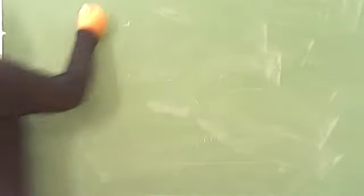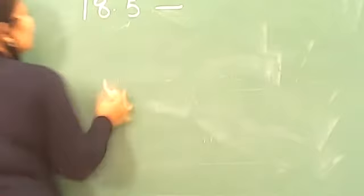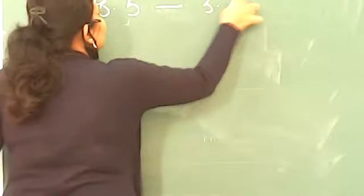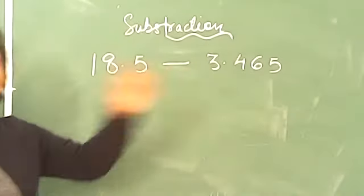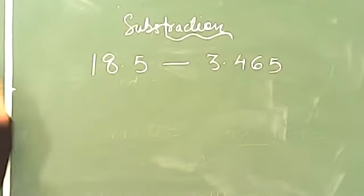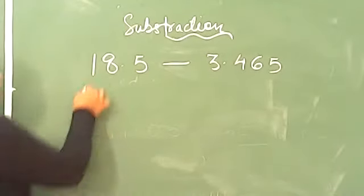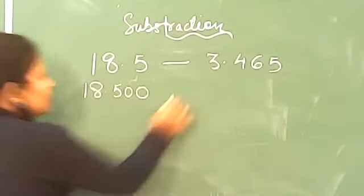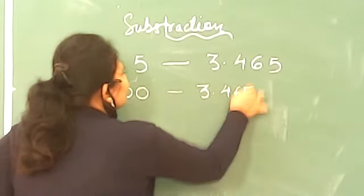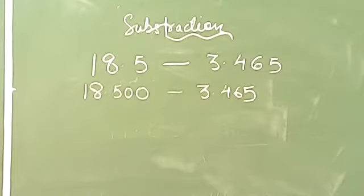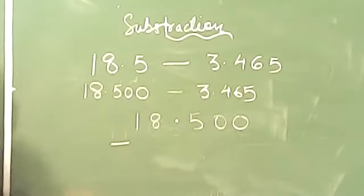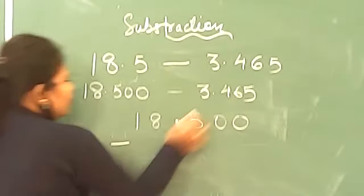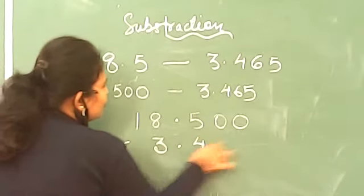Suppose your question is 18.5 minus 3.465. Suppose your question is this. Remember always, first we have to convert to like decimal. Again you don't have like decimal, so first you will convert to like decimal. It would give us 18.500. This is 3.465. Now again how we were doing for addition, we will write decimal here. This is 18, this is 500. Now for subtraction you will have the sign of minus, and then you will put decimal below decimal. This is 3, this is 4, this is 6, this is 5.